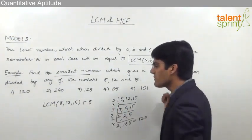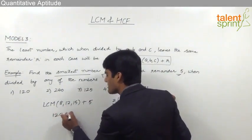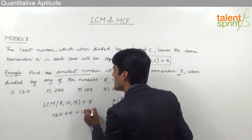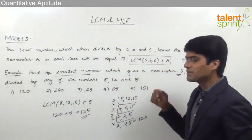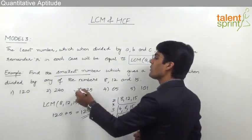So very clearly the LCM of 8, 12 and 15 is 120 and plus 5 will give 125. So we can say that the answer for this question is option 3, 125.